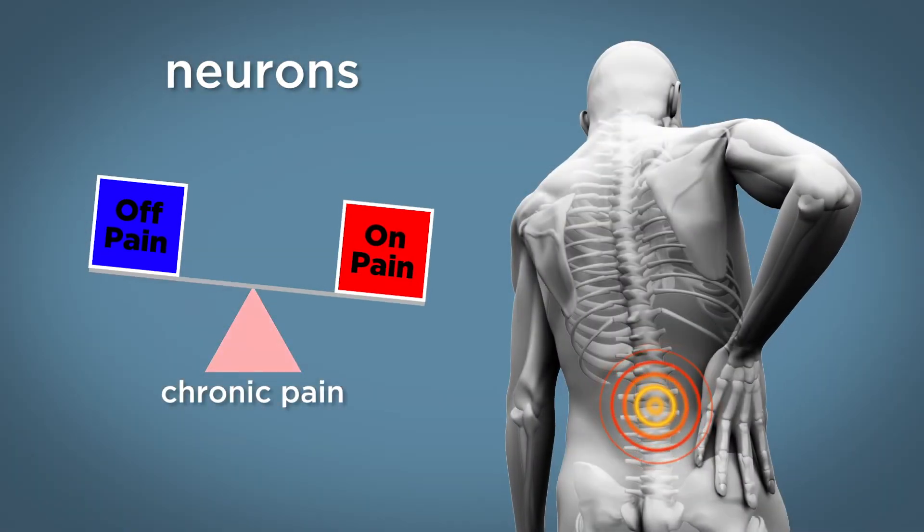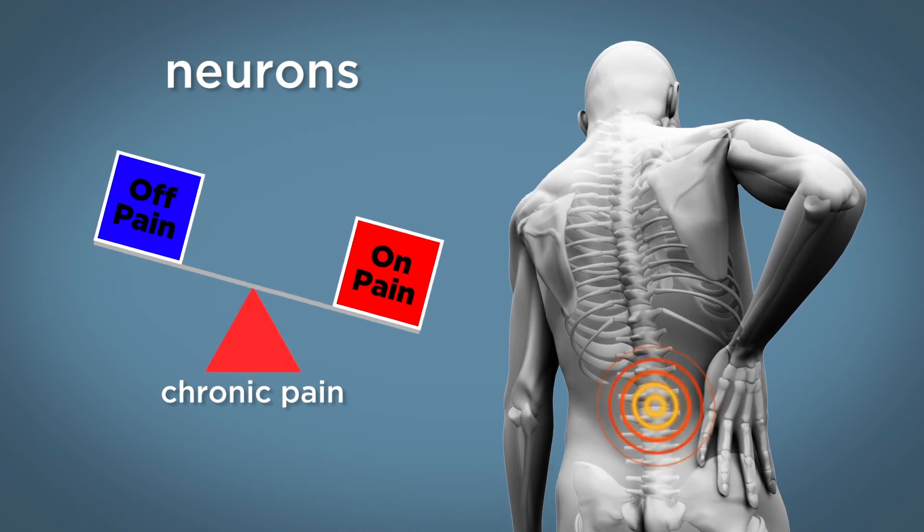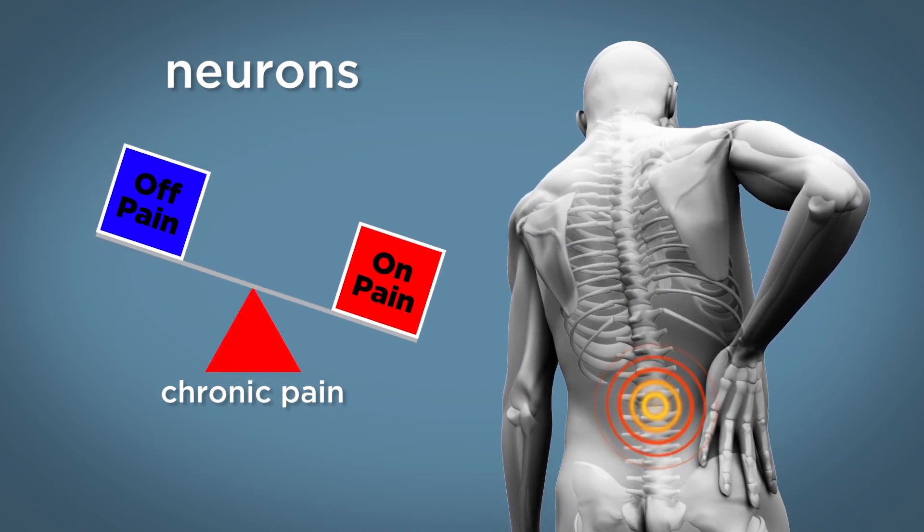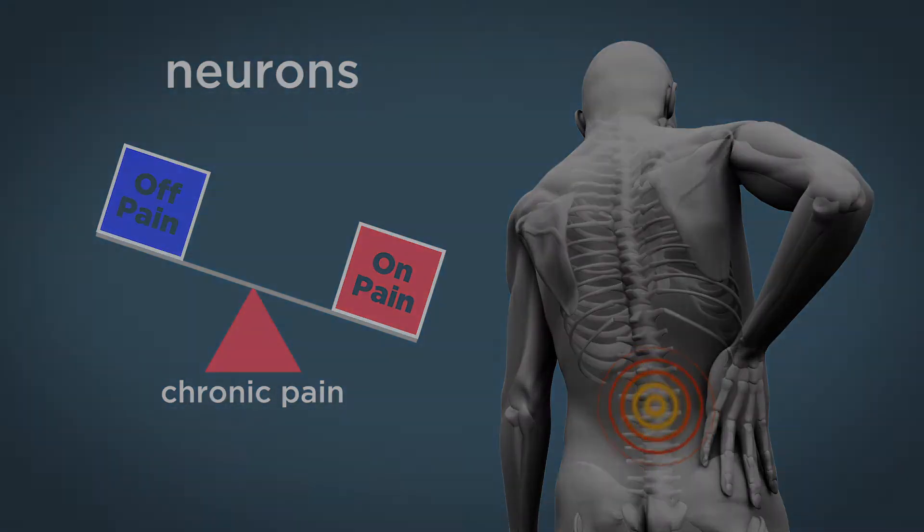When you have chronic pain, this balance changes so that there is now more activity in the cells that turn on pain and less activity in the cells that turn off pain.